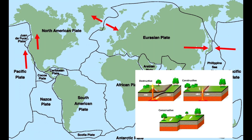A good example of constructive plate margins is in Iceland, where the North American plate and the Eurasian plate are moving apart from each other. A last really good example is California, where we've got those conservative plate margins moving from side to side between the Pacific plate and the North American plate.